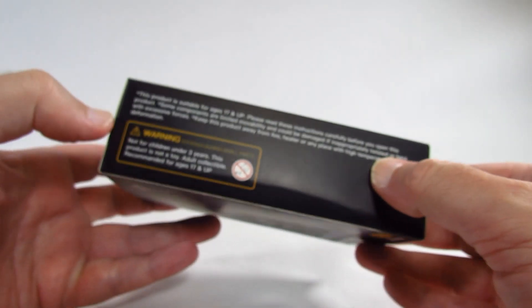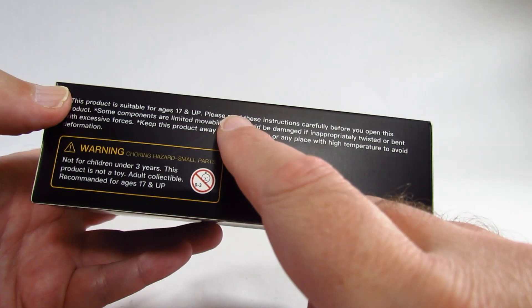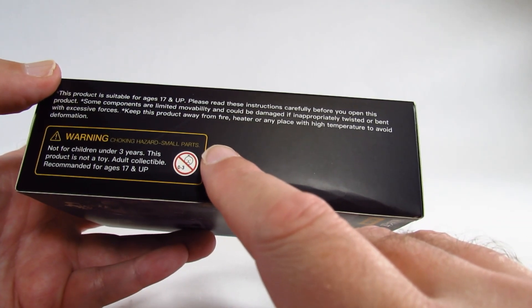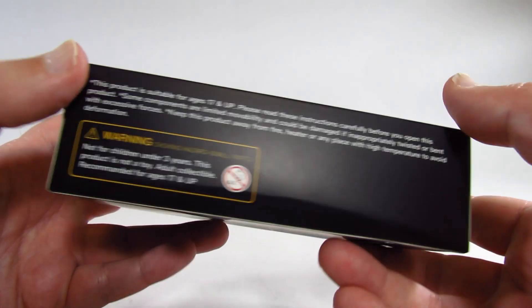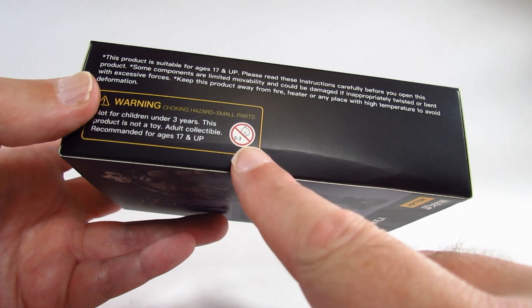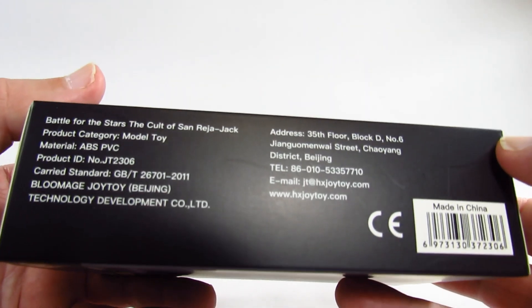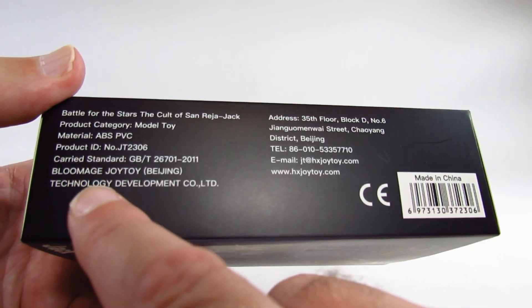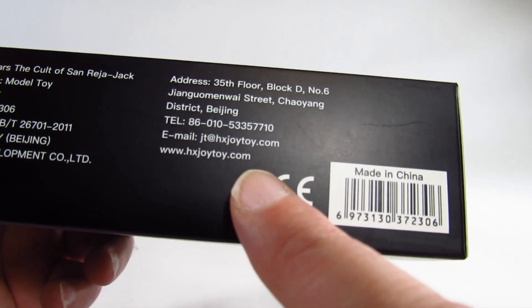This side gives us some safety information. This is not a toy, this is a model, not suggested for anybody under 17 years old because it's very fragile. Keep away from heat, certainly keep away from little children because it has small parts. Here's some information on this side about this product, the company name, the address of the company which is in China, in Beijing, China.